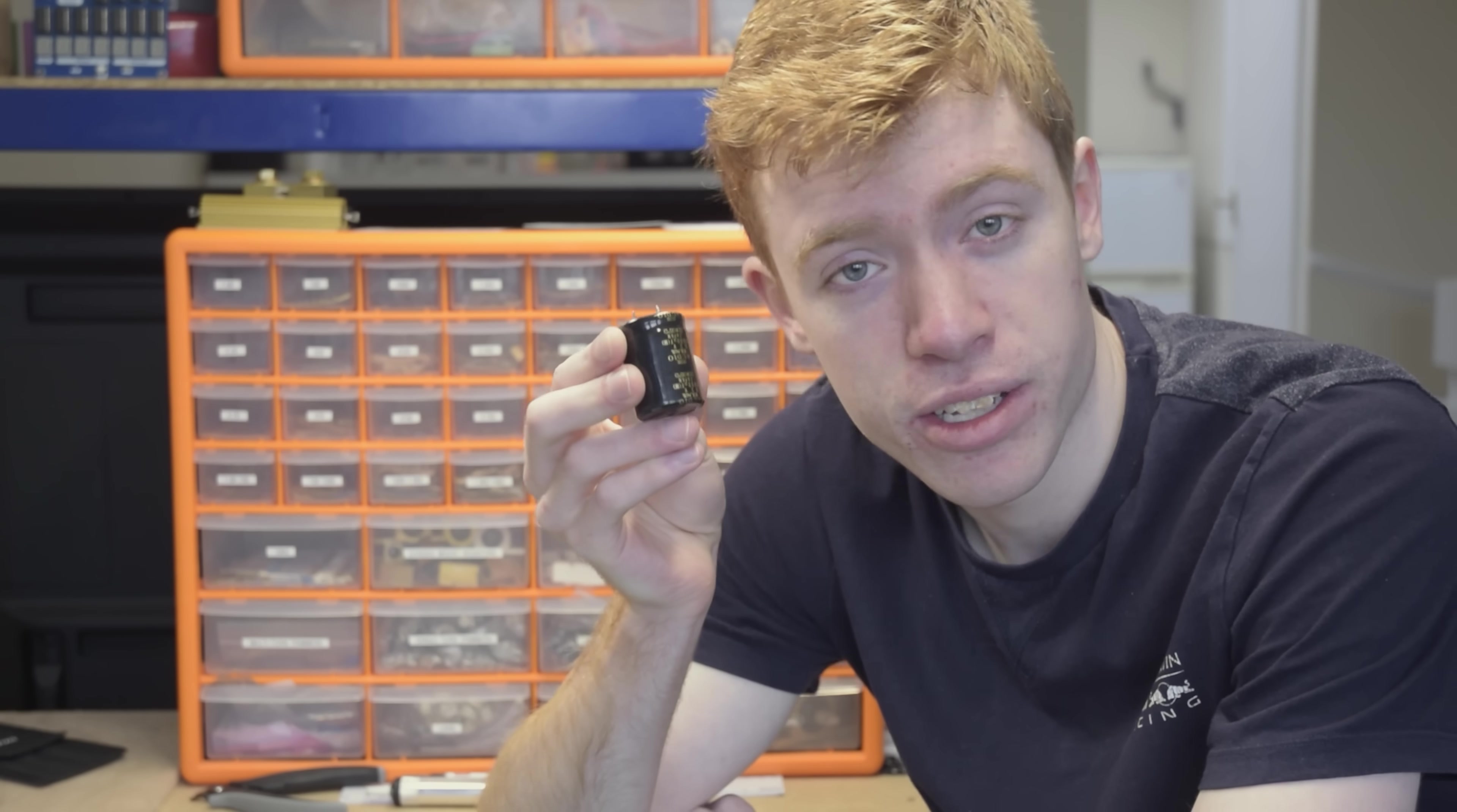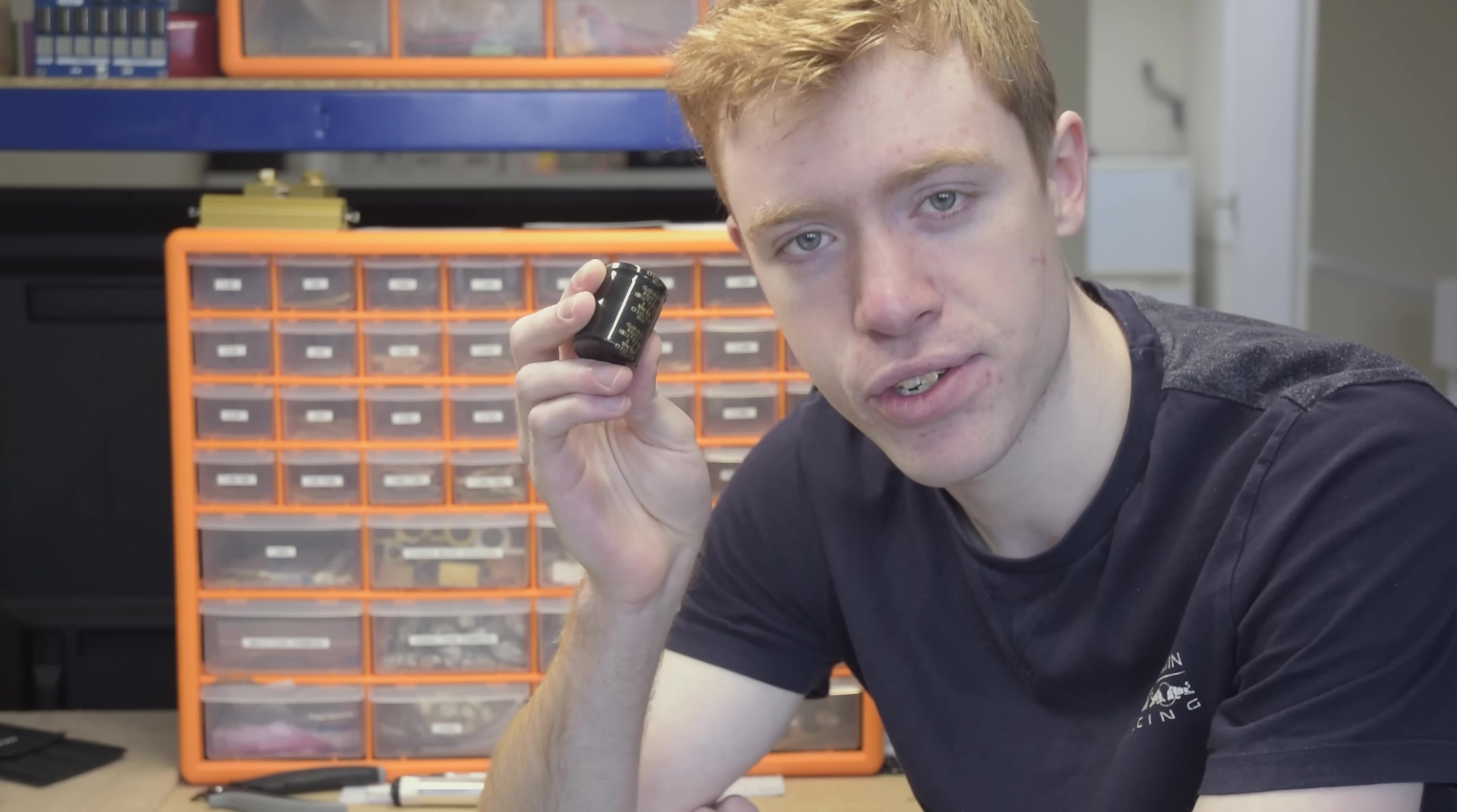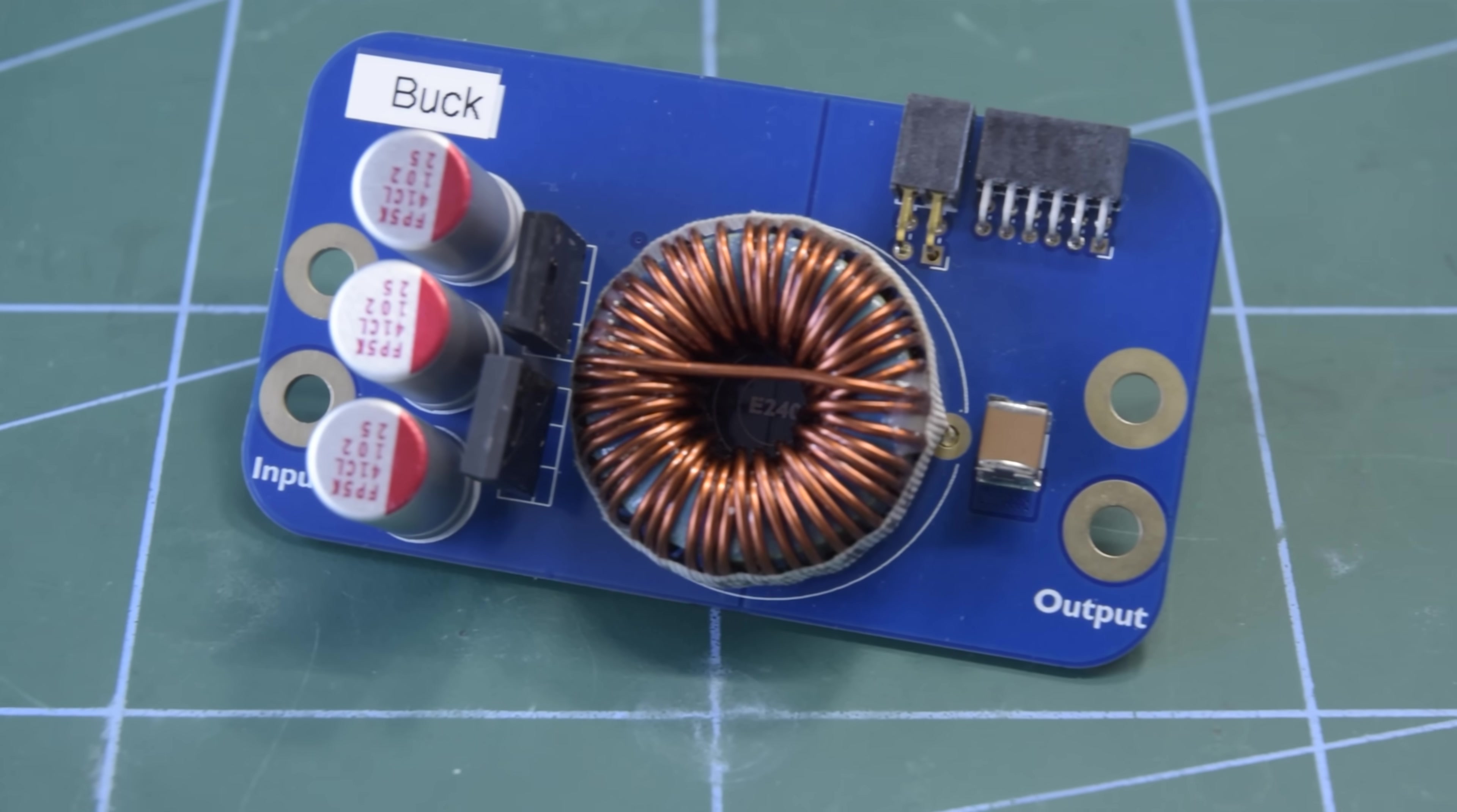Capacitors are used to smooth voltage. They'll do whatever they can to maintain the voltage across them. This means they'll source a very high current if you try to discharge them quickly, and also sink a very high current if you try to charge them up quickly. We can use this to produce brief high current pulses from a constant lower current input, for example in a buck converter.